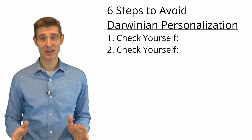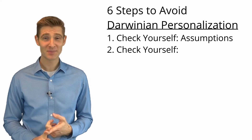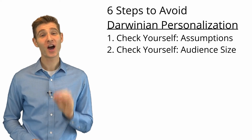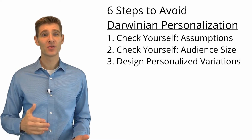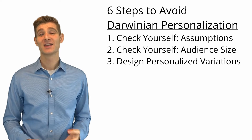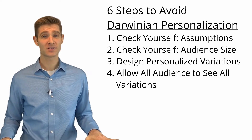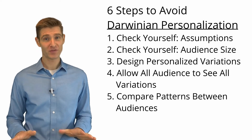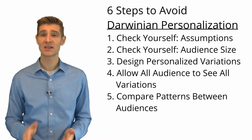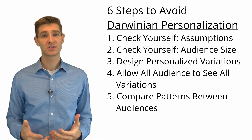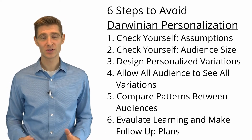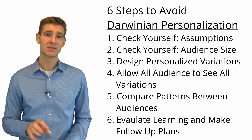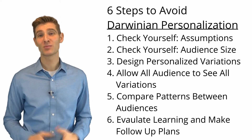So those are the six steps. Let me summarize. Step one: check your assumptions to make sure you're not assuming things where you don't have data. Step two: check your audience size to make sure that the personalized audience will be large enough. Step three: design variations that you think would be good for that personalized audience. Step four — the most important — show each of those variations to all audiences so you can segment after the fact. Step five: segment after the fact and see if the pattern of behavior is the same or different. If it's the same, personalization didn't make sense in this case; if it's different, you may have a case for personalization. Step six: take what you learned, make a plan of action, and use this disciplined data-driven approach to make a new plan of action to get closer towards personalization.